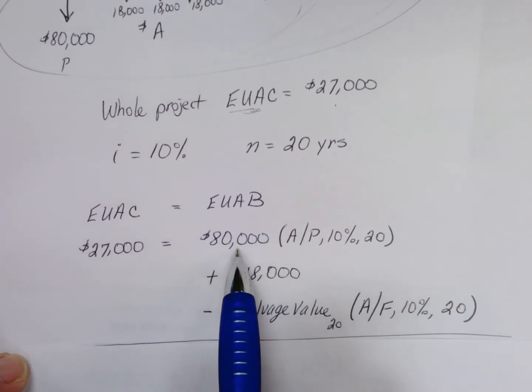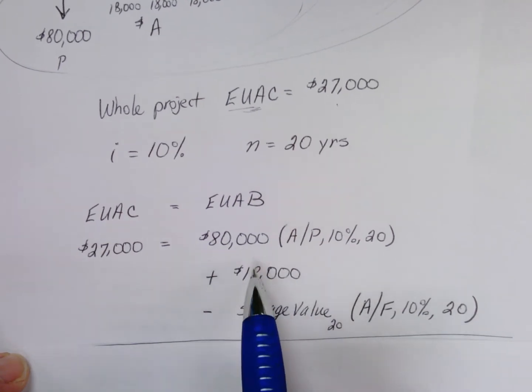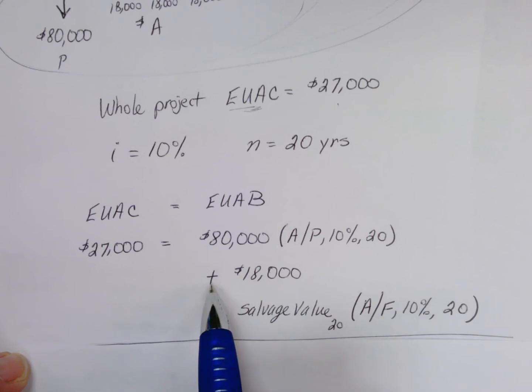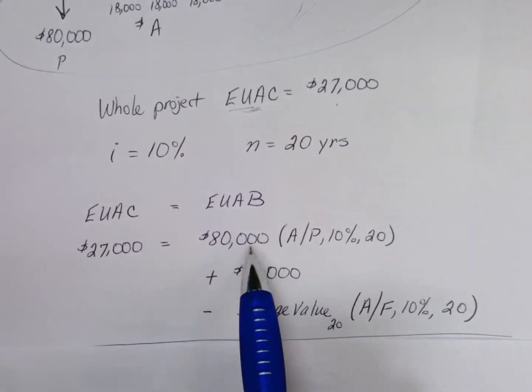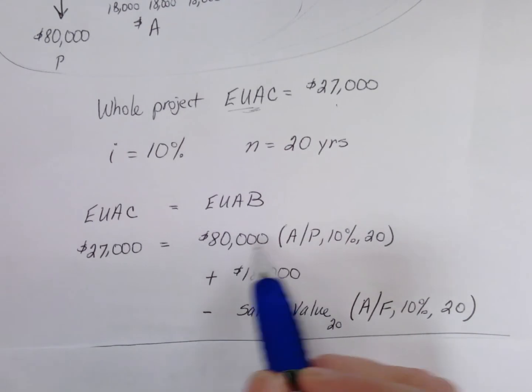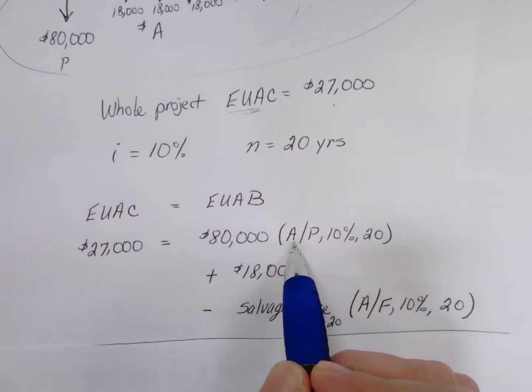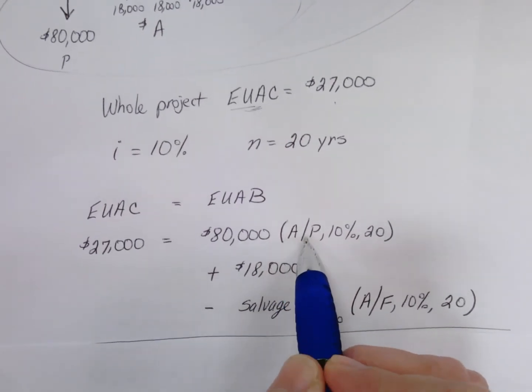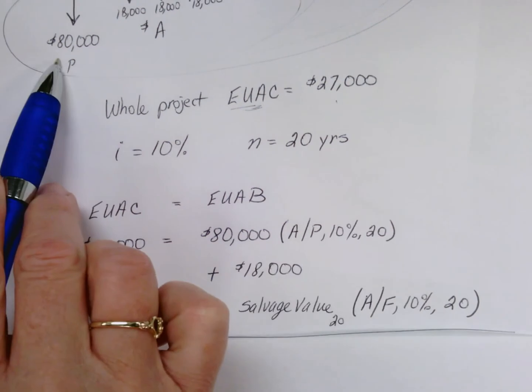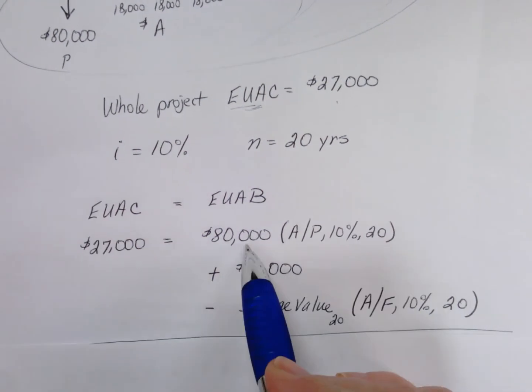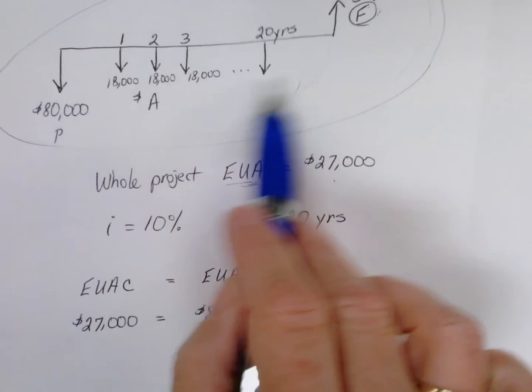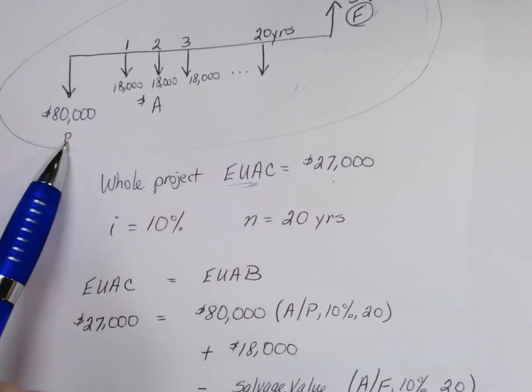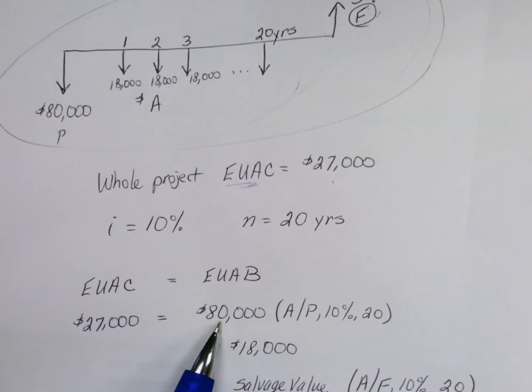$80,000 is one cash flow. Wait, let's look for a second—we're trying to find the annuity, so find an annuity given the present value, present cost of $80,000 at 10% for 20 years.